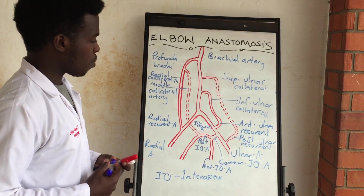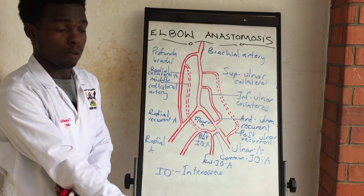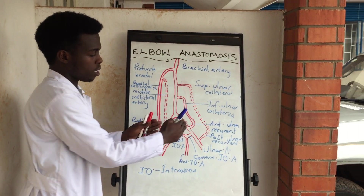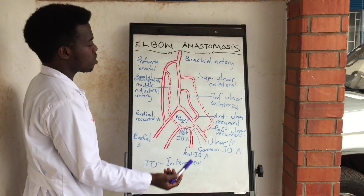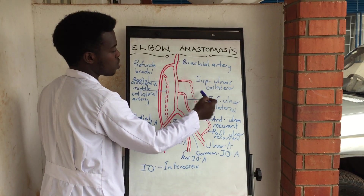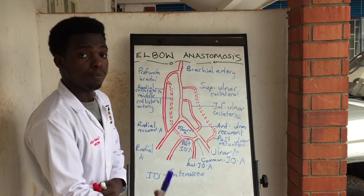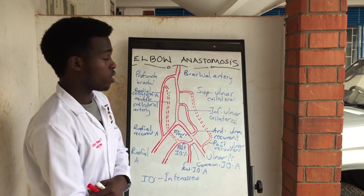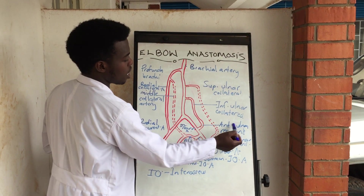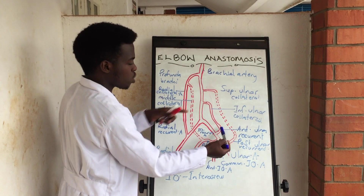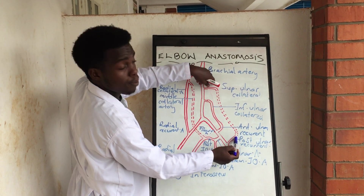Coming to the anastomosis itself — the dotted points occur behind the elbow joint, while the others occur anterior to the forearm. The superior ulnar collateral anastomizes with the posterior ulnar recurrent artery, posterior to the medial epicondyle. The inferior ulnar collateral anastomizes with the anterior ulnar recurrent artery, anterior to the medial epicondyle, and also occurs posterior to the medial epicondyle.